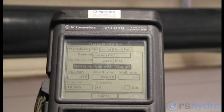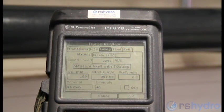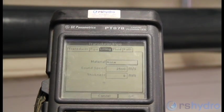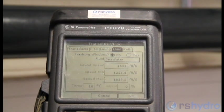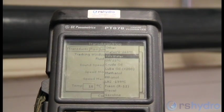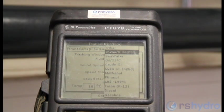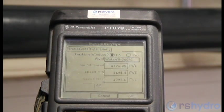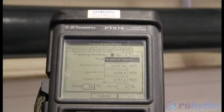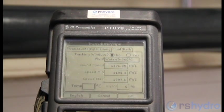Scroll over to the lining menu. In this case, none. In the fluid menu, select water from the drop-down list and enter the temperature, which in this case is about 18 degrees.